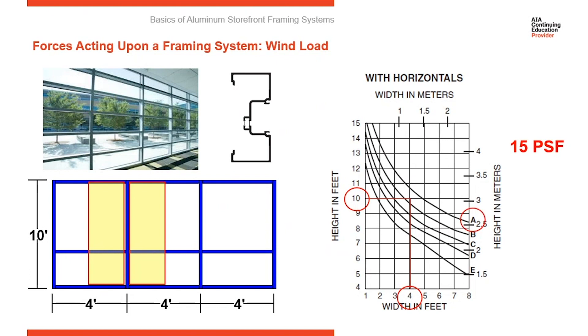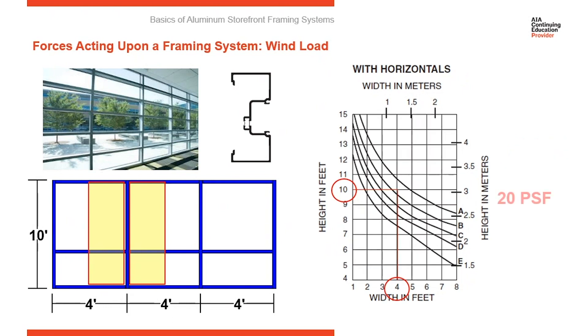So now here, if our wind load was 15 PSF, we're good to go. You can see four foot vertical spacing, 10 foot tall, where those meet is below or to the left of the line representing 15 PSF. But if our wind load was 20 PSF, now you can see the intersection of the two lines is above the curve representing 20 PSF. So this would not work. This is a failure.